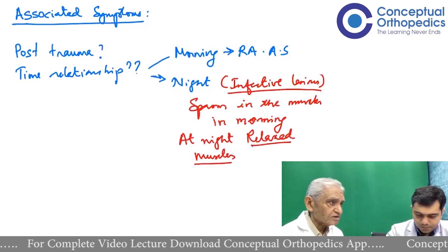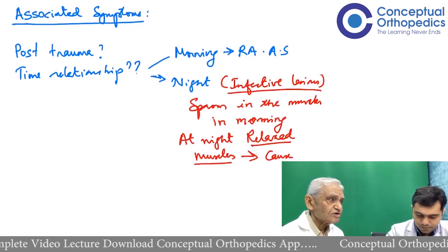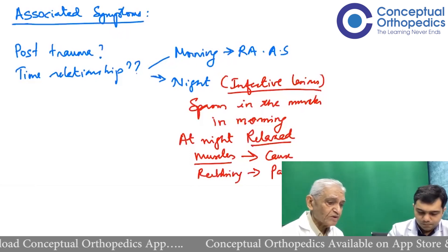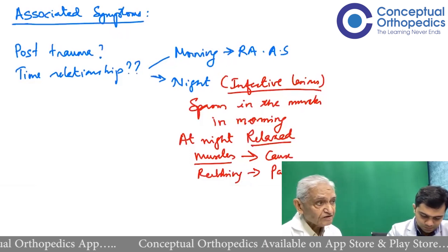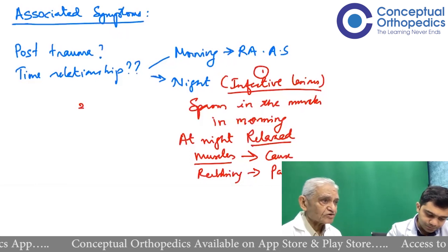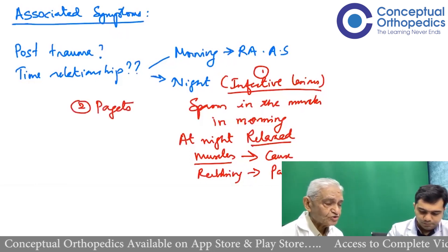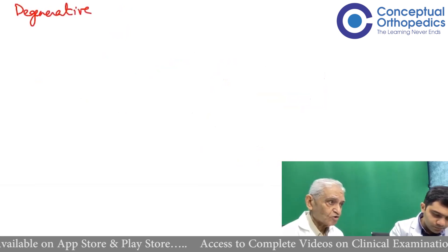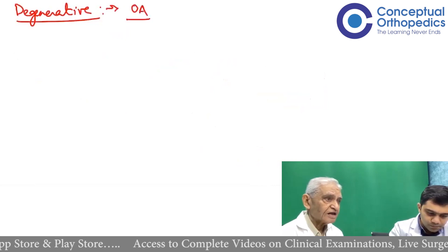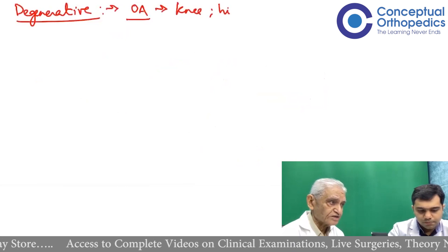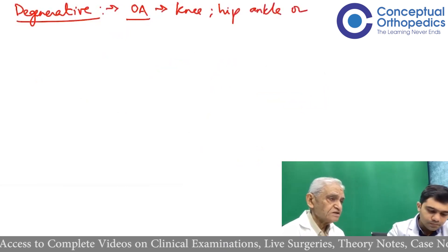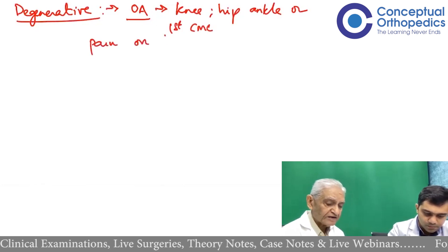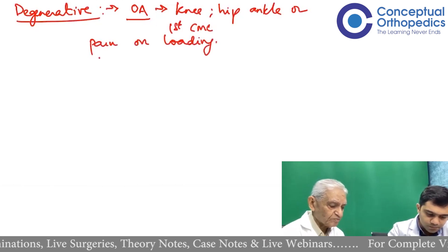Night cries are typical of pain in infective conditions. There are certain rare conditions like osteoid osteoma, a tumorous condition which causes pain predominantly at night. Similarly, Paget's disease again causes pain more at night. There are certain pains which occur throughout the day — for example, degenerative conditions like osteoarthrosis, especially of the weight-bearing joints: knee, hip, and ankle. Osteoarthrosis may be primary due to age or secondary. Any osteoarthrosis of these major joints will cause pain the moment you stand and walk — pain during the day, during the evening, and during the night on loading. This time relationship of pain guides us towards the possible diagnosis.